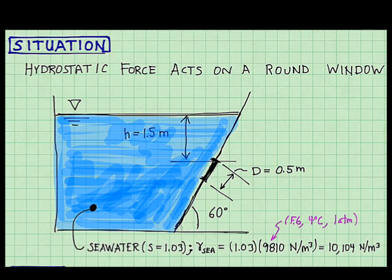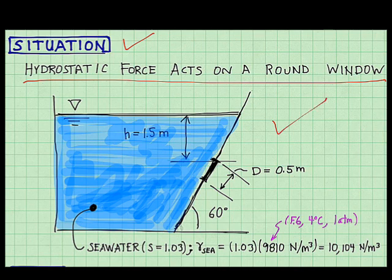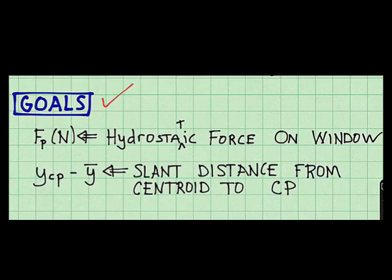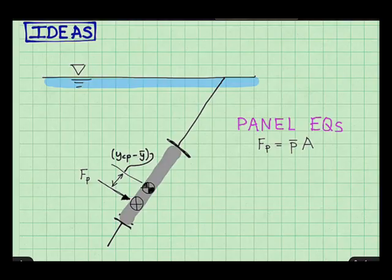To define the situation, I describe the problem in one statement. I make my situation diagram. And notice I capture the fluid properties right here. So I'll need the specific weight of seawater, which is 10,104 newtons per cubic meter, slightly higher than that of freshwater. I capture my goals next. So I'm looking for the magnitude of the hydrostatic force and the distance from the centroid to the center of pressure. That's the distance I showed you in the last sketch.